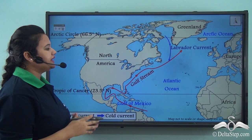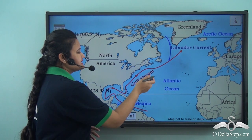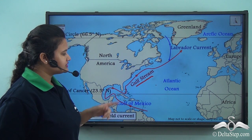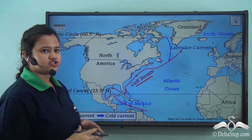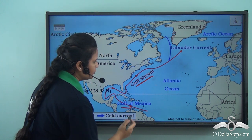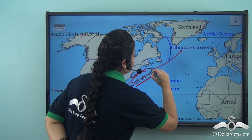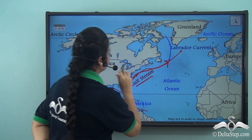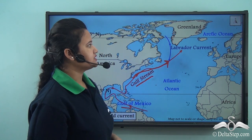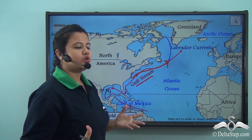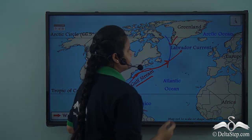An example of a warm ocean current is the Gulf Stream. The Gulf Stream originates in the tropical region near the Gulf of Mexico and then proceeds towards the northeastern coast of North America, where it connects with a cold current called the Labrador Current.